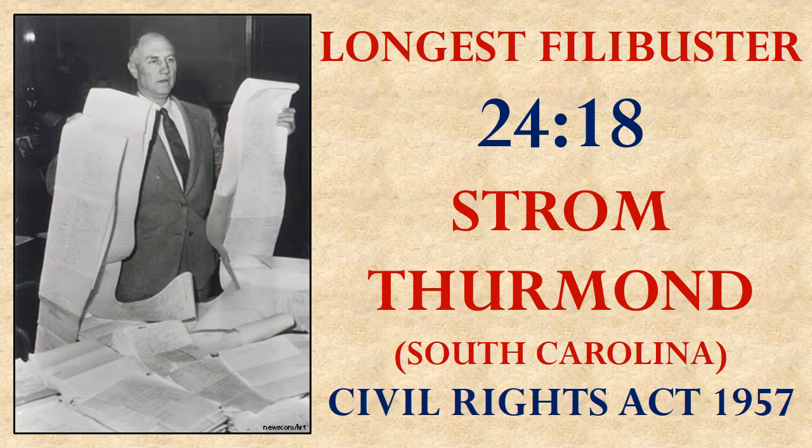For a filibuster to really work, it can't just be one person trying to stop something because eventually they'll get too tired and have to give in. For it to really work, you need a team of people filibustering so that as one gets tired, he can yield the floor to a fellow senator on his side and go take a nap while that person talks. Senator Strom Thurmond, who knew he was going it alone, actually went to the sauna the day before and intentionally dehydrated himself so he wouldn't have to urinate while talking and would never have to leave the room.